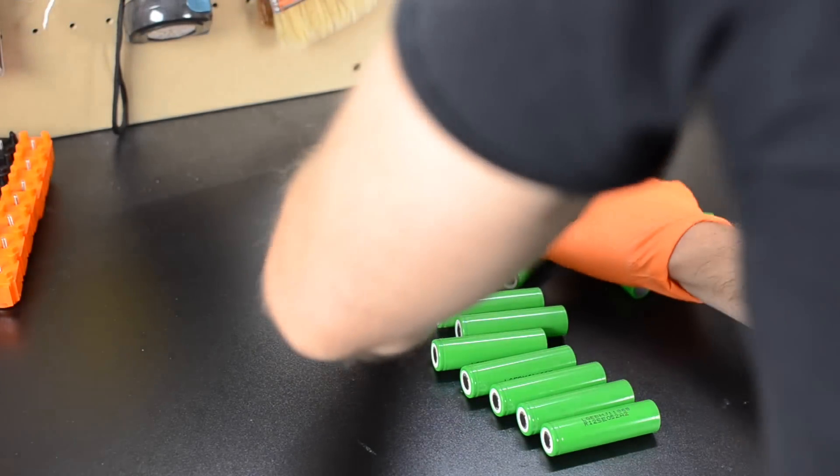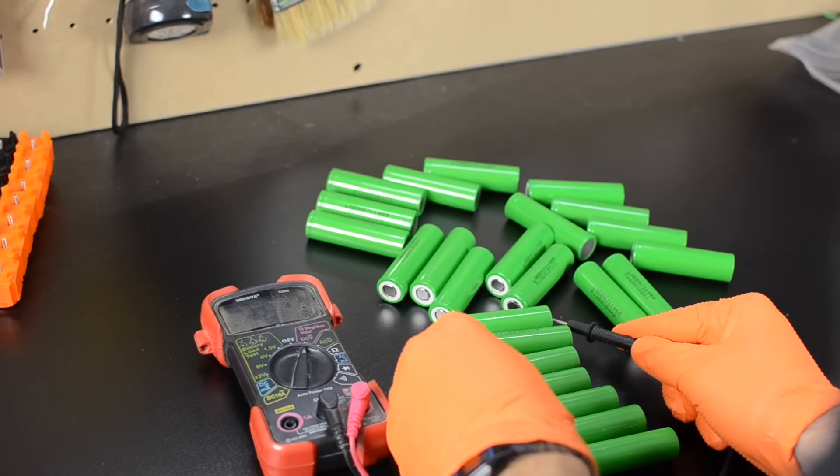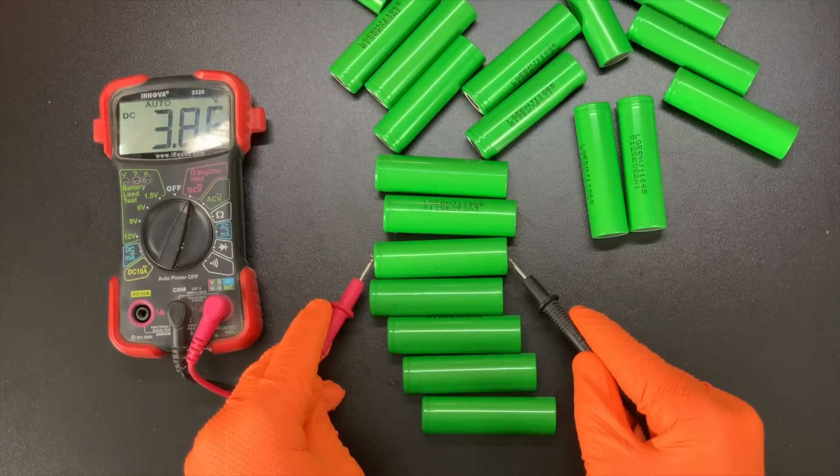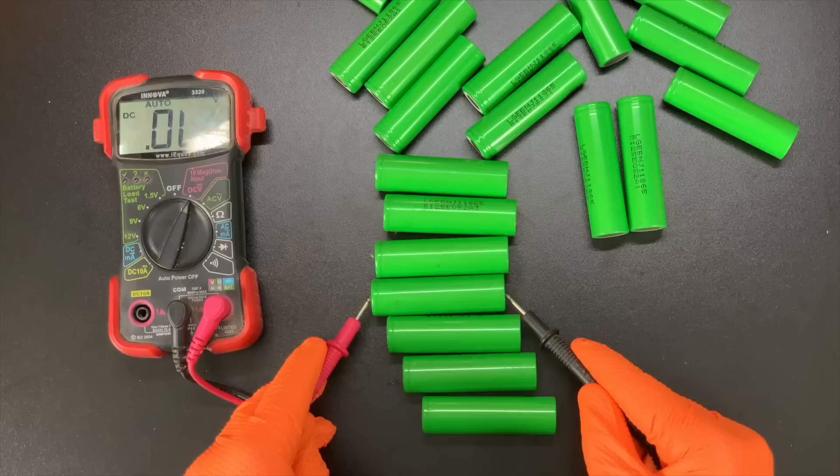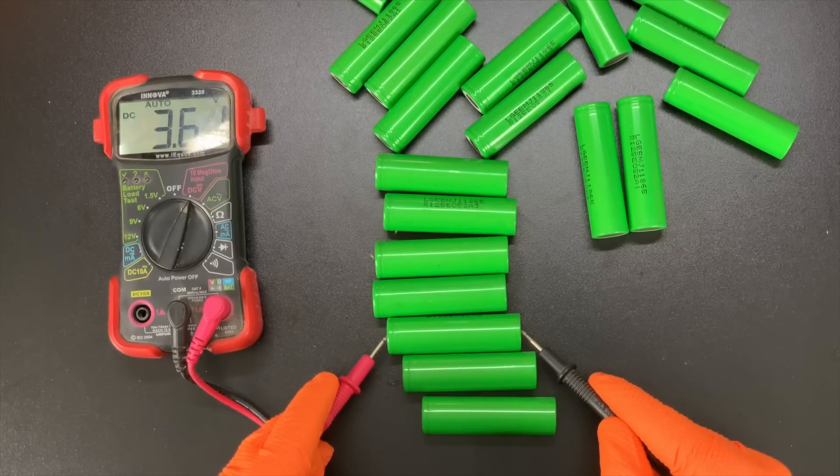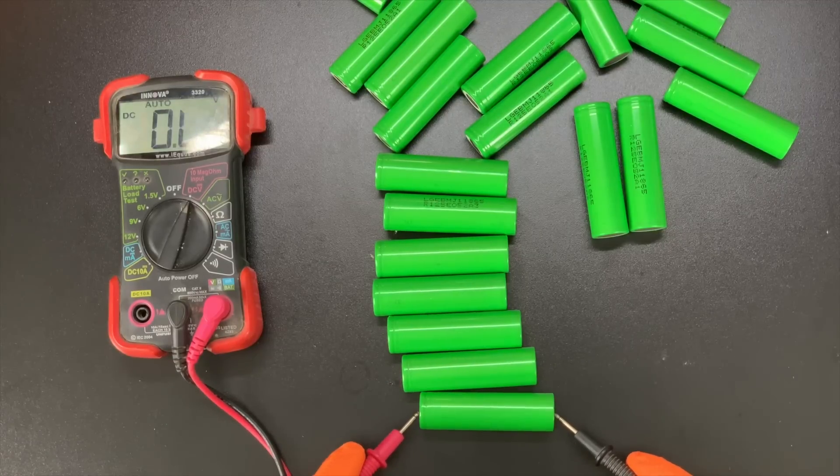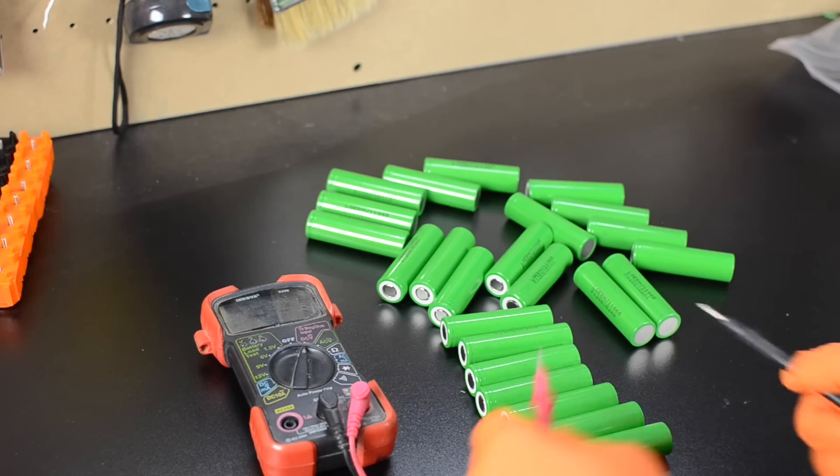I'm going to use LG MJ1 18650 cells today that also came from Vruzen.com, and I'll begin the build process by checking that they're all the same voltage or very close in voltage. If you buy new cells, then they should be. If you're using used cells, then you'll need to be more careful about making sure that they're all at similar voltages.